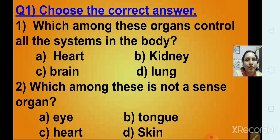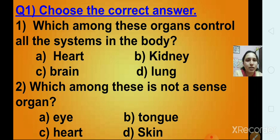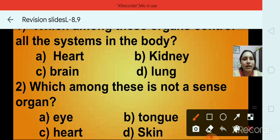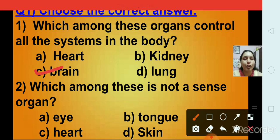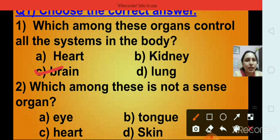Question number 1: Which among these organs controls all the systems in the body? Options are heart, kidney, brain, and lungs. The right answer is option C, that is brain. Brain controls all the systems in the body.